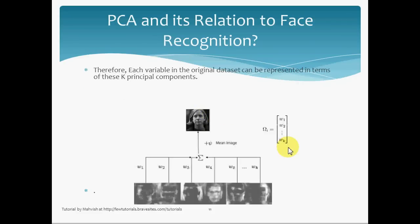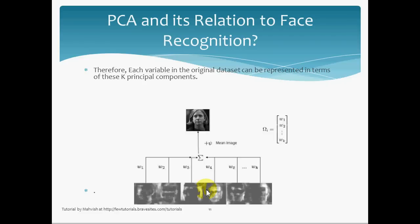Once we found our selected icon faces — the best set of icon faces that can represent the whole training set of images — then each variable in the original data set can be represented in terms of these k principal components. Each image in the training set data, or the incoming unknown image, can be represented as a linear combination or as a weighted sum of these eigenfaces that we found earlier.